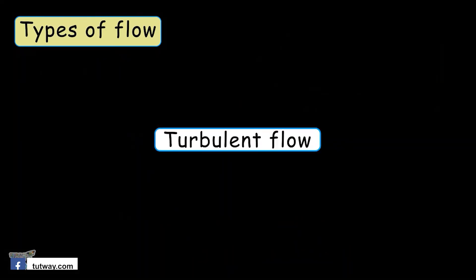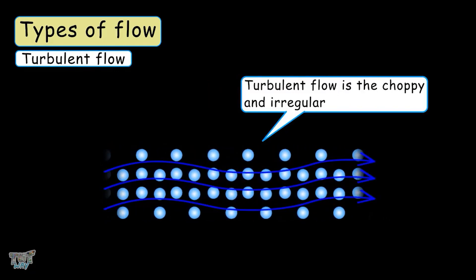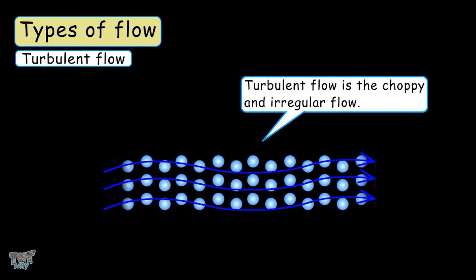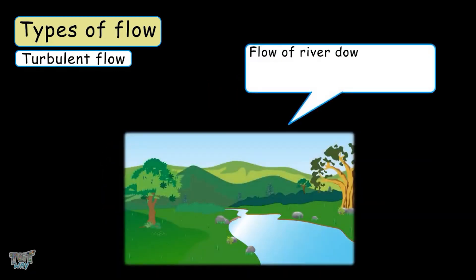Next is turbulent flow. This is choppy and irregular flow of fluids. An example is flow of a river down a slope is called the turbulent flow of the river.